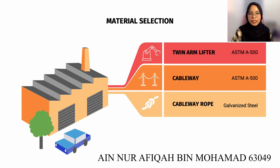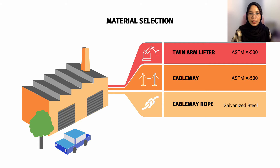I will briefly explain the material selection done in Engineering Design 2. STM A500 is chosen as the material for the cableway and twin arm lifter after comparing it to two other materials, mainly because it has higher yield strength. For the wire rope material, galvanized carbon steel rope is chosen based on the table provided by ISO 4375, which guides cable selection for various suspension loads.